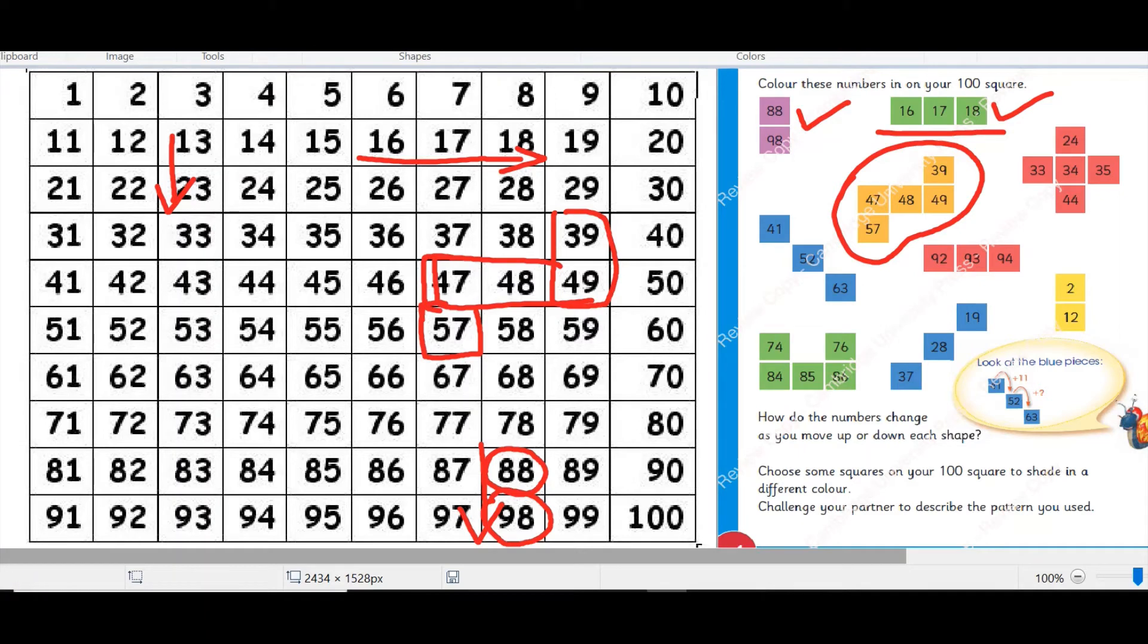They will observe that when they go downwards they increase 10 in it and when they go backwards they decrease one number like 49 minus 1 will be 48. 48 minus 1 would be 47 and when they go downwards they again increase 10. 47 plus 10 would be 57.